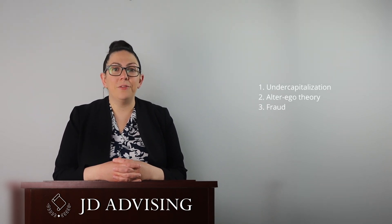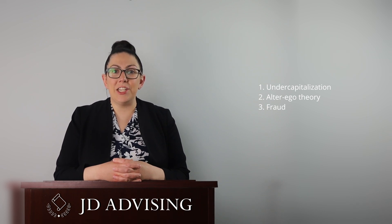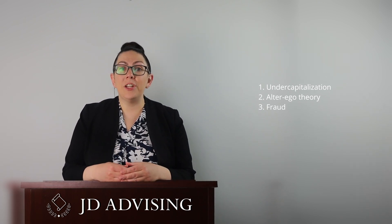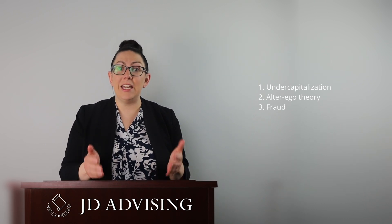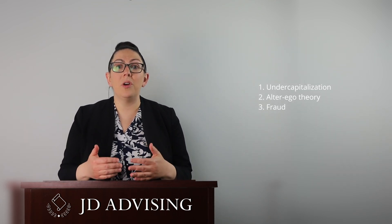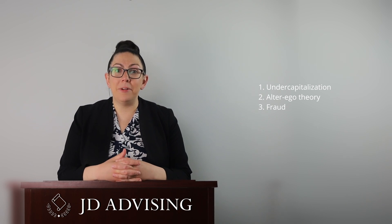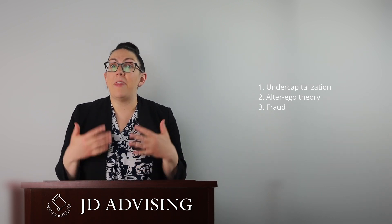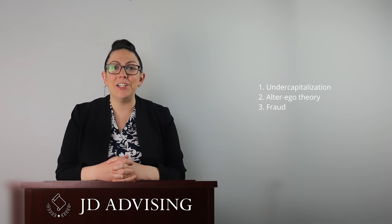Second, if you have piercing the corporate veil as an issue on your exam, be sure to discuss all three theories under which a plaintiff might be able to pierce the corporate veil. Those three theories are undercapitalization, alter ego, and fraud. When I say you should discuss each theory, I mean that you should do more than just identify what each theory is—be sure to contemplate arguments that each side might make and discuss whether there are any facts in the fact pattern in support of each theory. Having these approaches memorized will help save you time because you'll already know how to organize your answer.